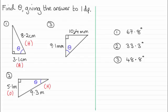And in number three, we've got this side 10.4 millimeters - that's the opposite side to the angle theta - and this side here is the adjacent side.